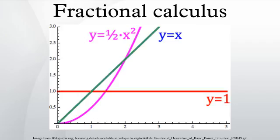Let f(x) be a function defined for x greater than zero. Form the definite integral from zero to x. Call this J. Repeating this process gives J², and this can be extended arbitrarily.